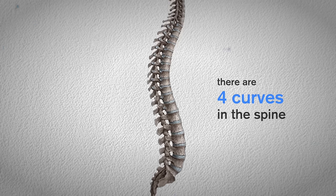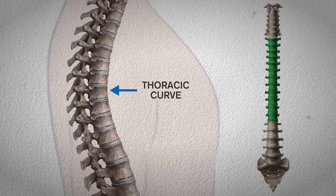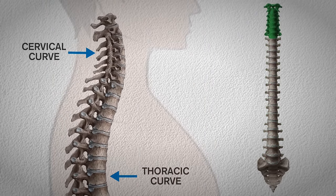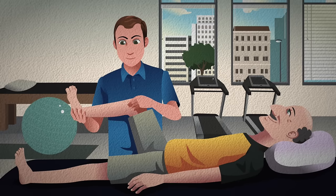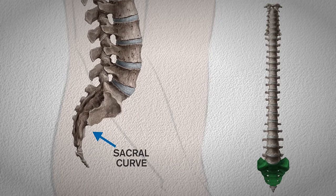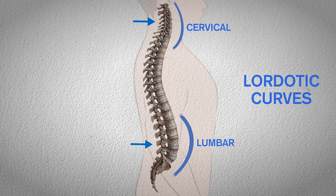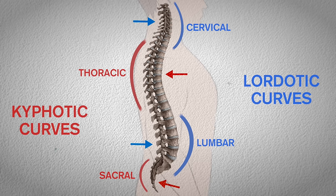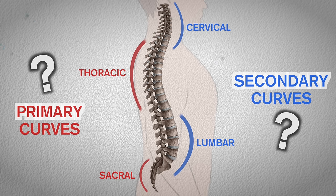There are four curves in the spine. You're probably most aware of the lumbar curve, the thoracic curve, and the cervical curve, as these are most frequently referred to by doctors and physical therapists. But there's also the sacral curve. Both the cervical and lumbar curves are shaped inwards — called lordotic curves — while the thoracic and sacral curves are shaped outwards, or kyphotic curves. These can be classified as primary and secondary curves.